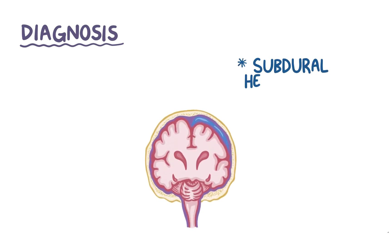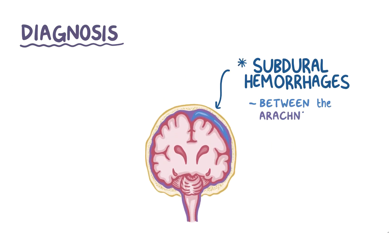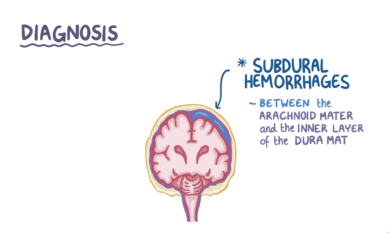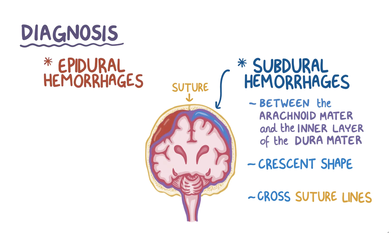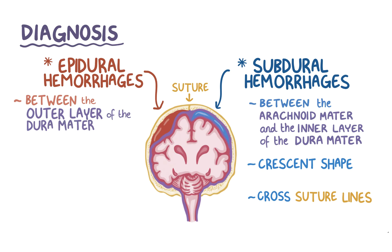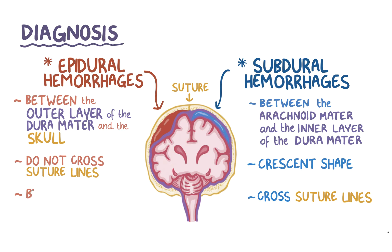The blood in a subdural hemorrhage is located between the arachnoid mater and the inner layer of the dura mater. So on a CT scan, subdural hematomas follow the contour of the brain and form a crescent shape, and cross suture lines. In contrast, epidural hemorrhages cause blood to build up between the outer layer of the dura mater and the skull. Since the outer layer of the dura mater adheres tightly to the skull at sutures, epidural hematomas don't cross suture lines and they push on the brain forming a biconvex shape.